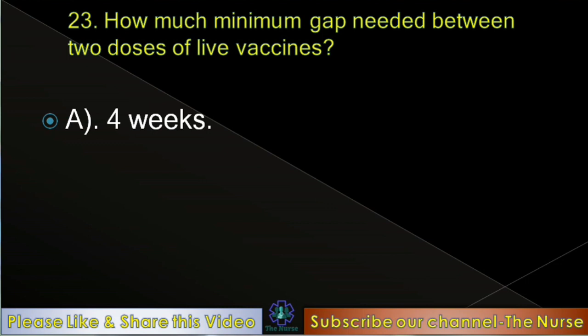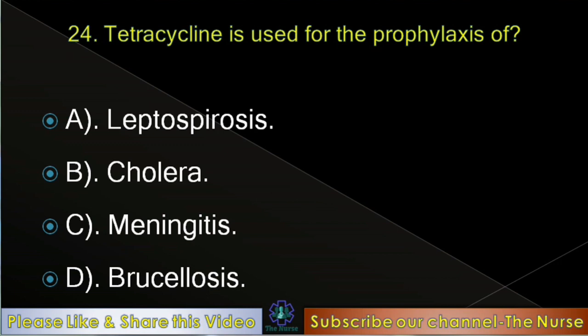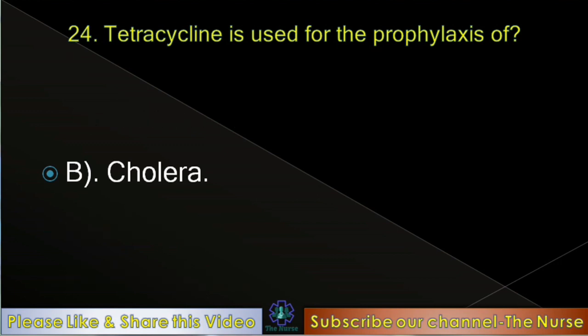Next question: Tetracycline is used for the prophylaxis of — leptospirosis, cholera, meningitis, or brucellosis. Correct answer: Cholera.